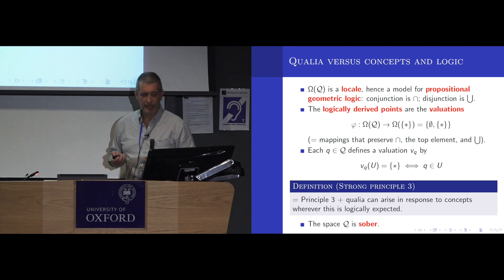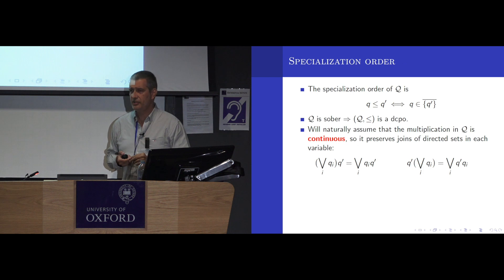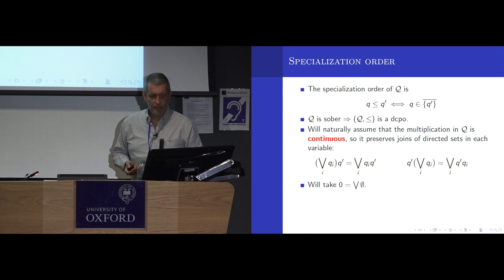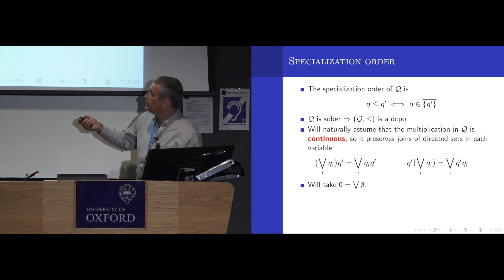OK. What are the implications of this mathematically? Well, any topological space has a specialization order, which is defined up there. For a sober space, this is a complete DCPO. That means that every directed, upwards directed set, has a supremum, or a join. Of course, we should assume that the multiplication should be continuous, and that will give you these distributivity conditions. Multiplication preserves these directed joins in each variable separately. There's another join, which I added in the beginning, which is the impossible qualia. If you take that to be the least element, so the join of the empty set, then these distributivity conditions give you precisely the absorption loss.